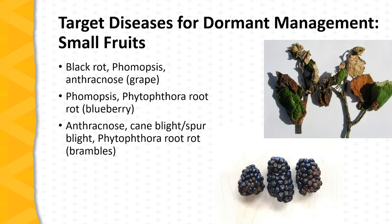The dormant season is a particularly important time from the standpoint of management of several small fruit diseases. These diseases include black rot, phomopsis, and anthracnose of grape; phomopsis and phytophthora root rot of blueberry; and anthracnose, cane blight, spur blight, and phytophthora root rot of brambles.